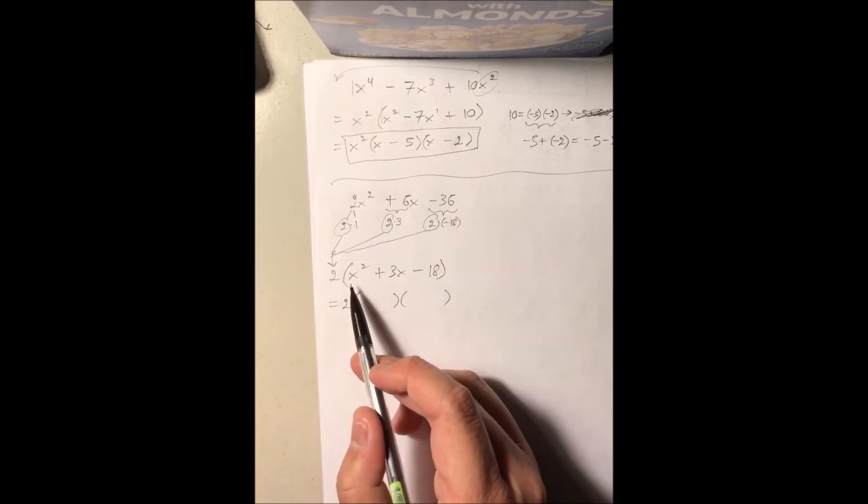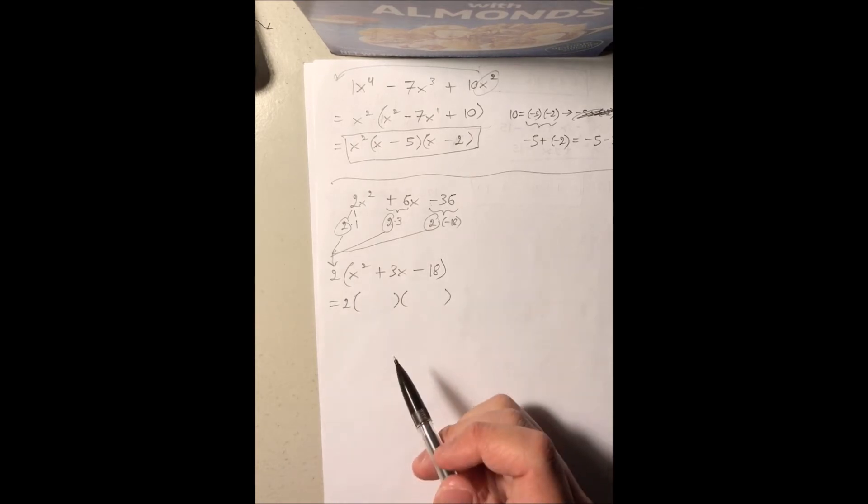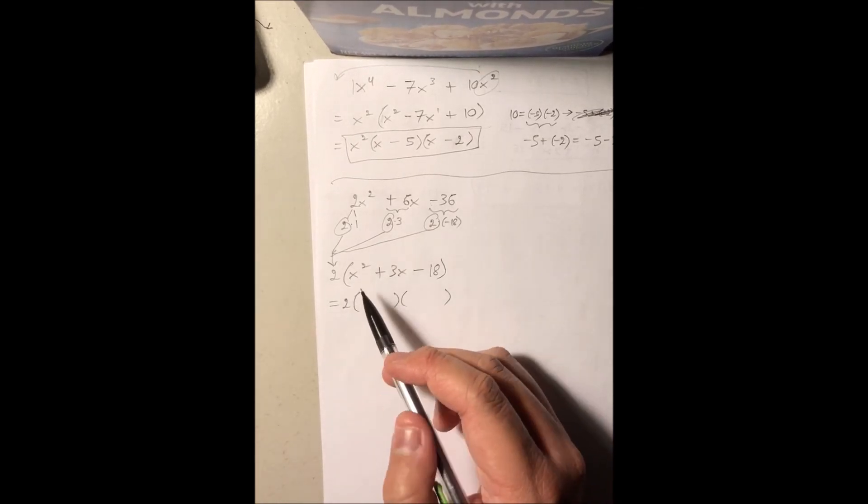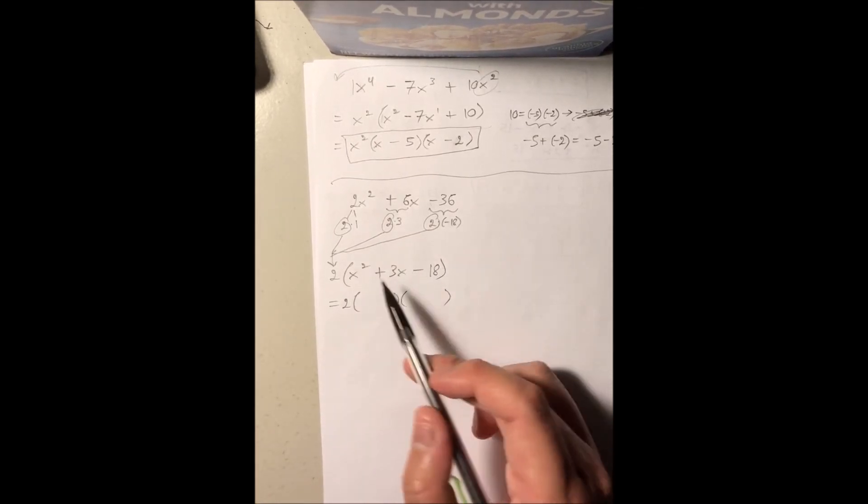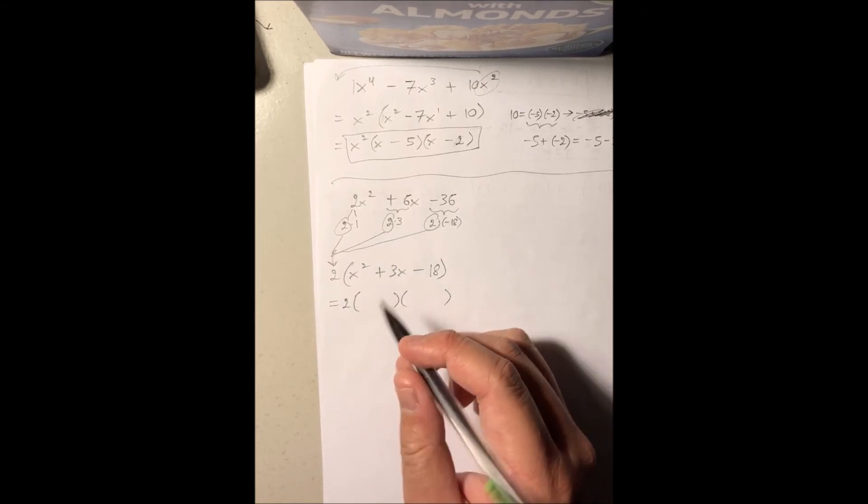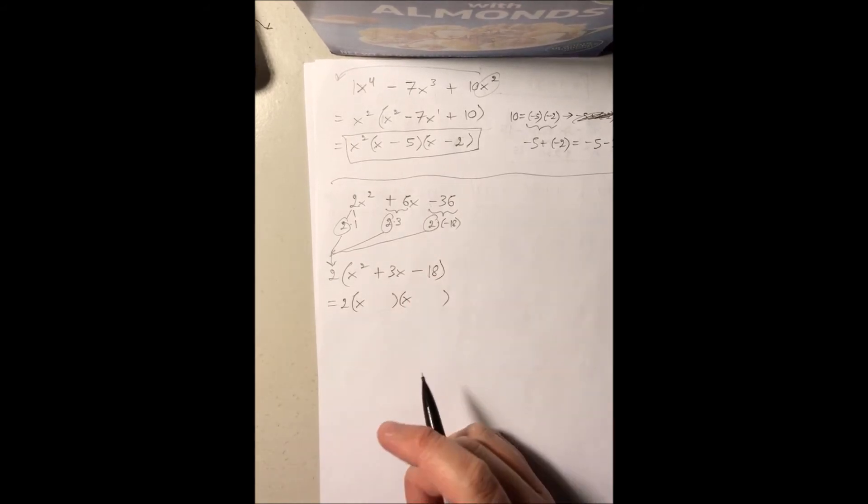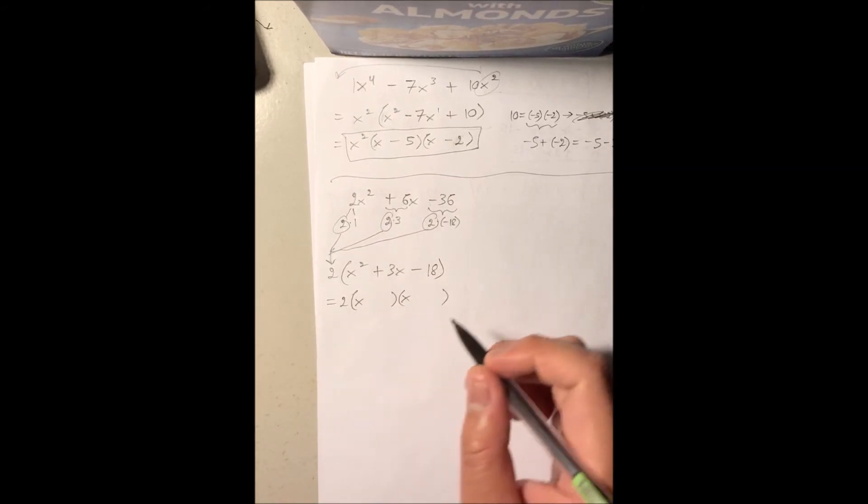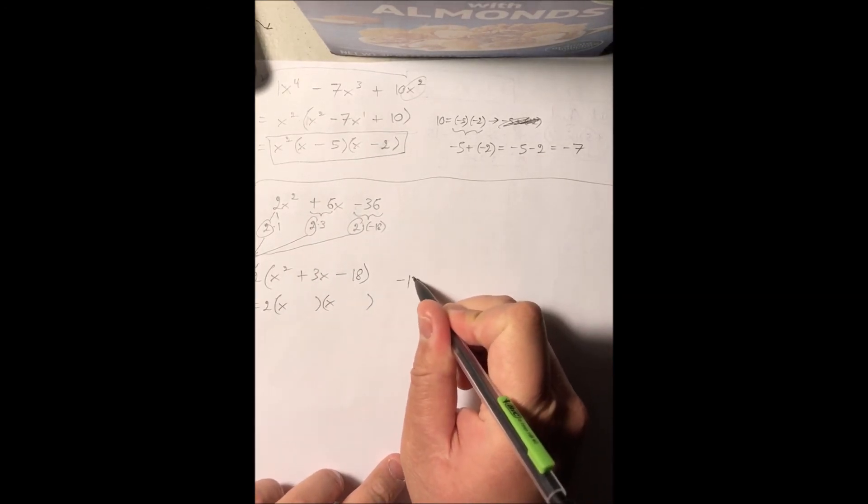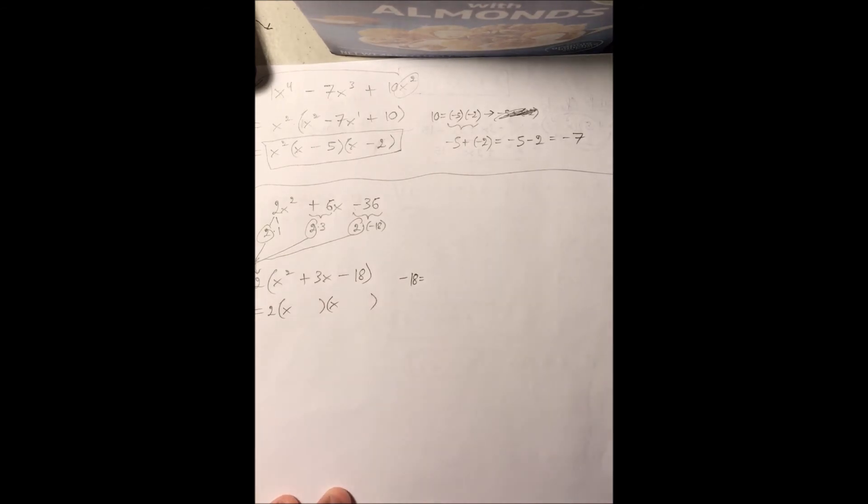With the leading coefficient of 1 for this quadratic expression inside parentheses, we look at the first term, the last term, and the second coefficient. For the first term x squared, it's the product of x and x. For the last term, two numbers multiply to give us negative 18, but also add together to give us the second coefficient, positive 3.